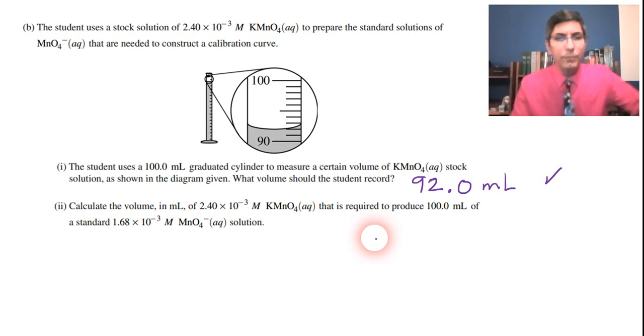Now part two for this one, we're trying to dilute something down. It says we have a stock solution that's 2.40 times 10 to the negative third molar of the permanganate ion. And it says how much of this are we going to need to produce 100.0 milliliters of a 1.68 times 10 to the negative third molar permanganate solution. So this is the type of problem where you would need to use the dilution equation.